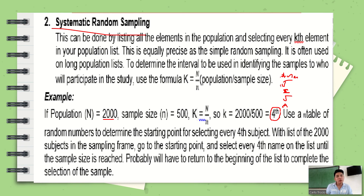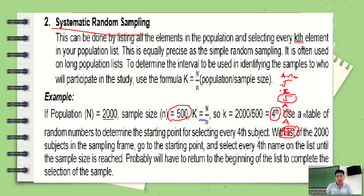Continuing the systematic random sampling: one, two, three, four — Esmeralda is part of the sample. Continue until you complete your 500 respondents. If done manually it takes time, but in the next videos you will learn how to do it in Microsoft Excel.